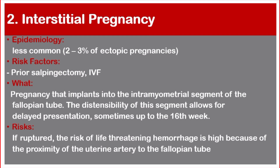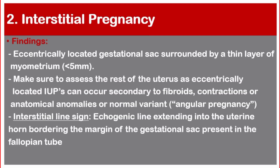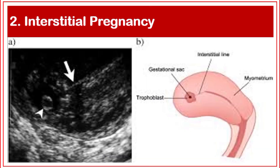If ruptured, the risk of life-threatening hemorrhage is high because of the proximity of the uterine artery to the fallopian tube. This ultrasound picture shows a gestational sac next to the endometrium in a case of interstitial pregnancy; the white arrow shows the empty uterine cavity.